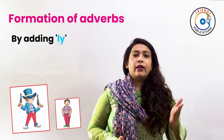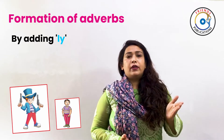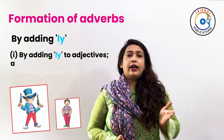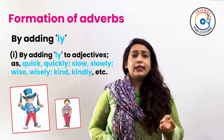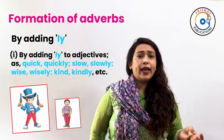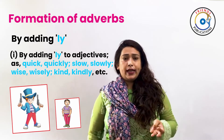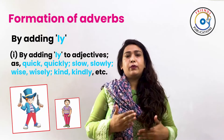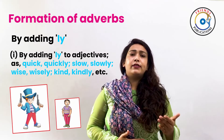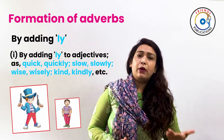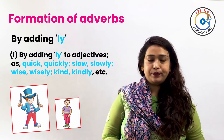For example, if we add '-ly' to an adjective, it will become: slow becomes slowly, quick becomes quickly. Likewise, we can modify adjectives by adding '-ly' to them.